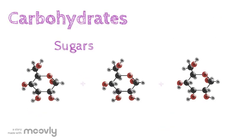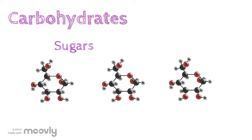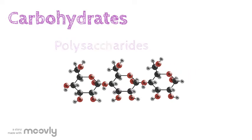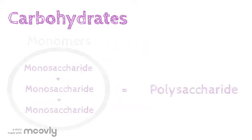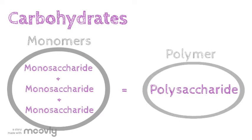Carbohydrates are made of sugars. When multiple sugar molecules are bonded together, we call them polysaccharides. Poly means many, and saccharide means sugar. Monosaccharides are the monomers, and polysaccharides are the polymers. But they're all carbohydrates.